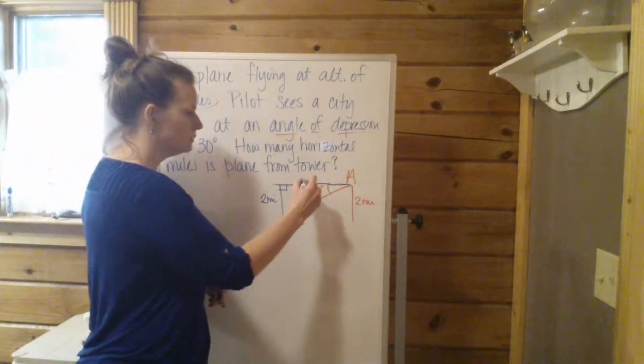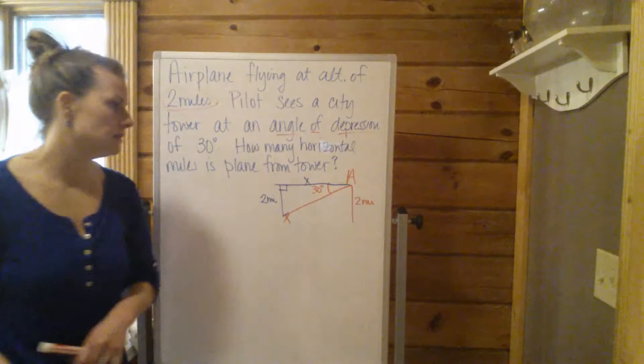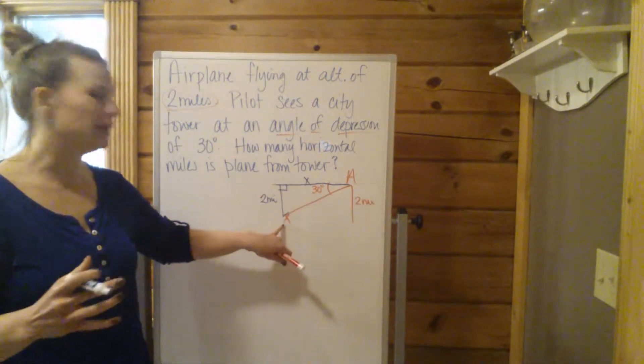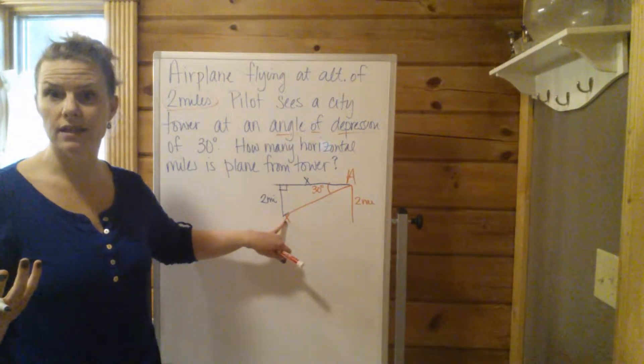Now we're looking for X. That is the horizontal number of miles from the airplane to the point above the tower.